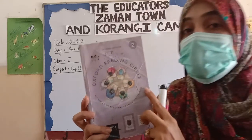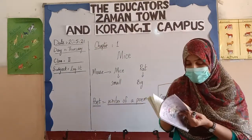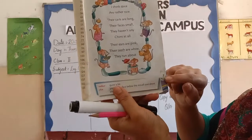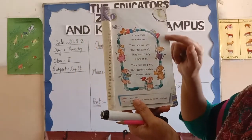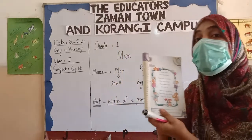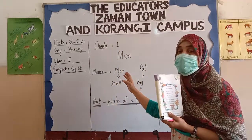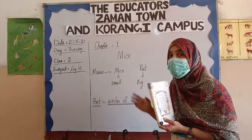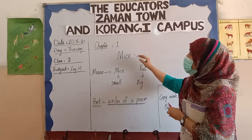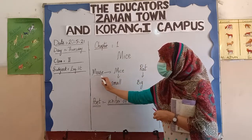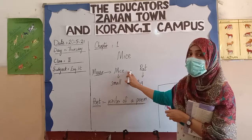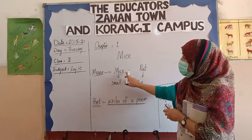Okay my students, let's start the chapter. Before starting the chapter, you have to open page number 9. This is your page number 9 and this is your chapter today — the first chapter. Before starting our chapter, you should know what a mice is, what a mouse is. Because our chapter name is Mice, and mice is the plural of mouse. Mouse is singular, and two or more are plural — that's why it is mice.